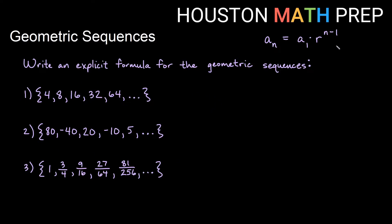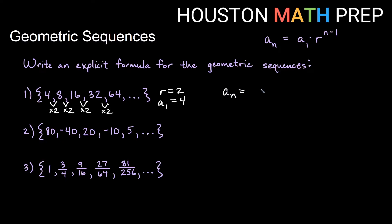All of these are geometric and we want to write them in this form. The first one is 4, 8, 16, 32, 64. We start at 4, and the common ratio is 2 — take any term and divide it by the term before it and you get 2. So r is 2, and a1 is obviously 4. So we write the formula as: a sub n equals 4 times 2 to the n minus 1. And that's our formula for this first one.